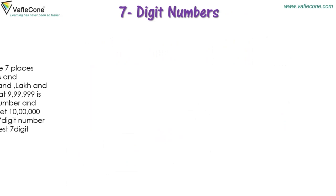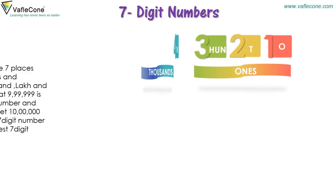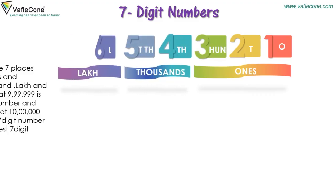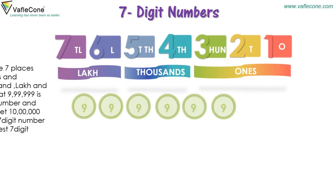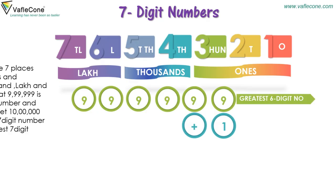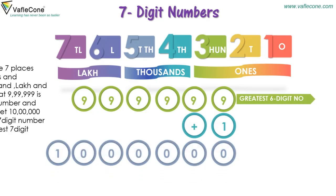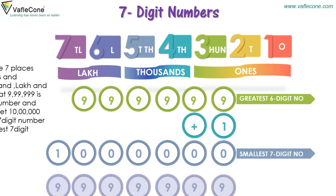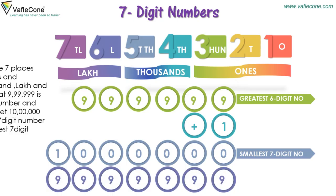Seven-digit numbers require seven places: ones, tens, hundreds, thousands, ten thousands, lakh, and ten lakh. We know that 9,99,999 is the greatest six-digit number, and when we add 1 we get 10 lakh, which is the smallest seven-digit number. 99,99,999 is the greatest seven-digit number.